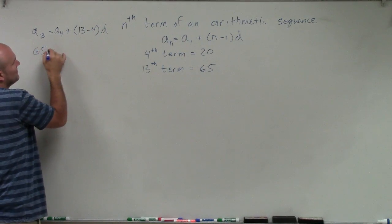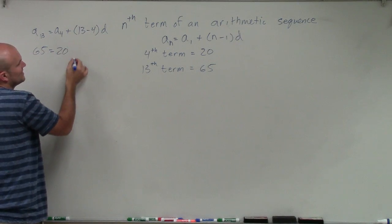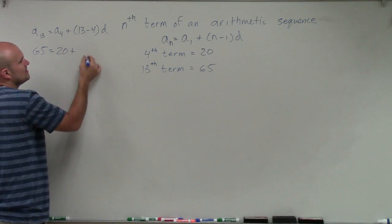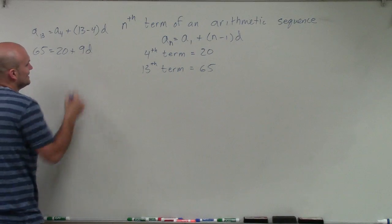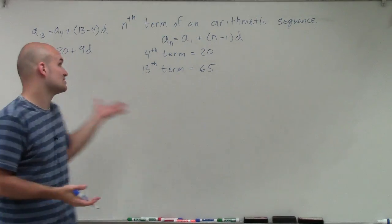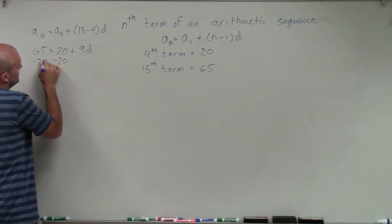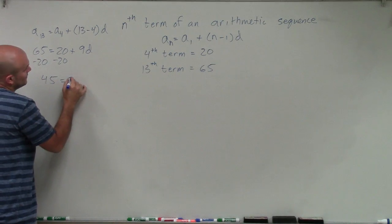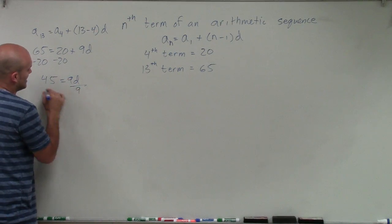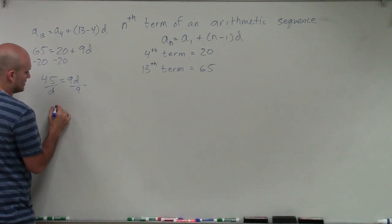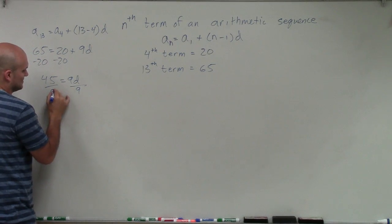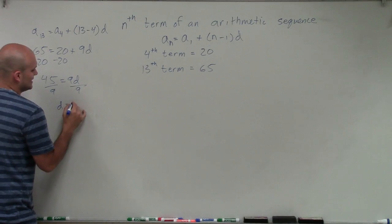Now a sub 13, we said, was 65. a sub 4, we said, is 20, plus 13 minus 4 is 9d. Now what I can simply do is solve for d. So I subtract 20, and therefore I get 45 equals 9d. Divide by 9, divide by 9, that's d. And we can say d equals 5.